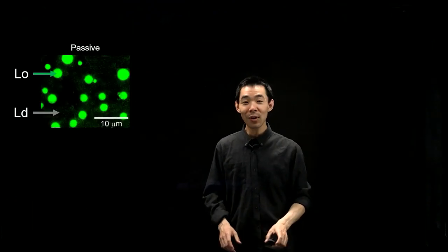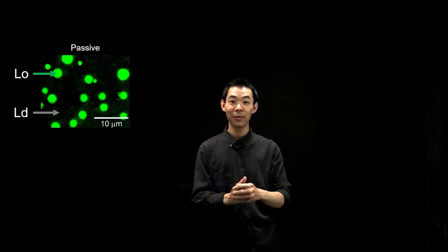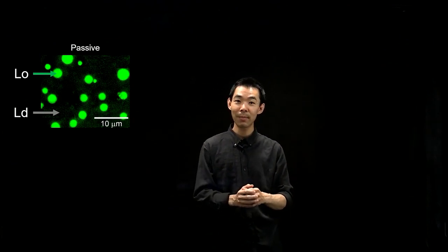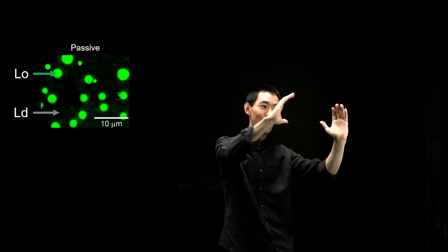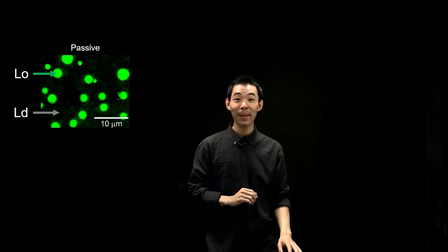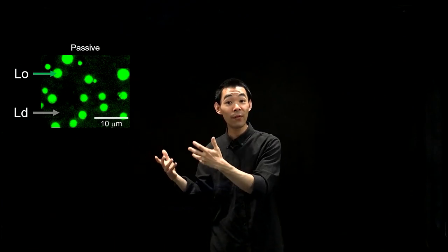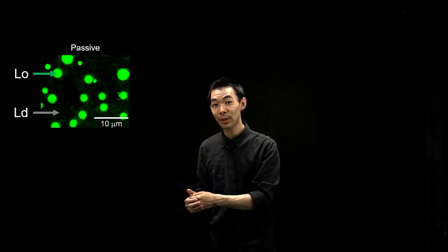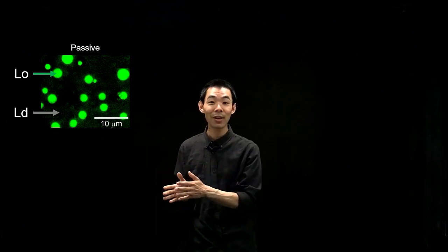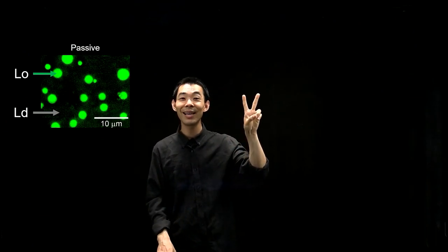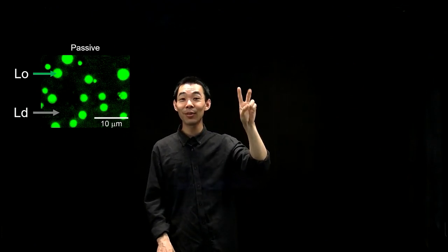So far I've told you about the size of the domain and how it grows as a function of time. In summary: for the passive case, domains remain circular and grow slowly like t^(1/3); in the active case, domains are non-circular and grow faster like t^(2/3). Now I'd like to move on to the second question and talk about the structure — how does the structure of the domain change when you add active flows?